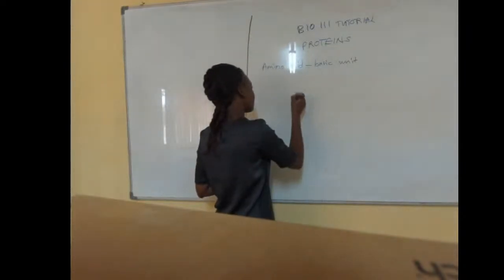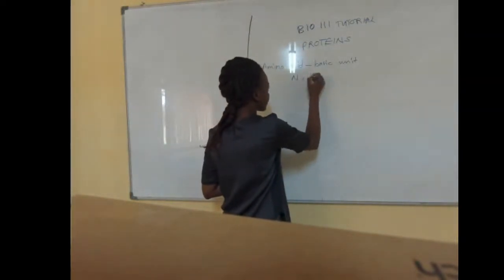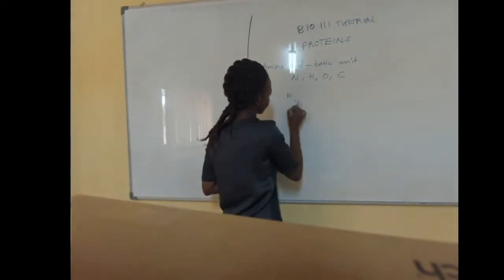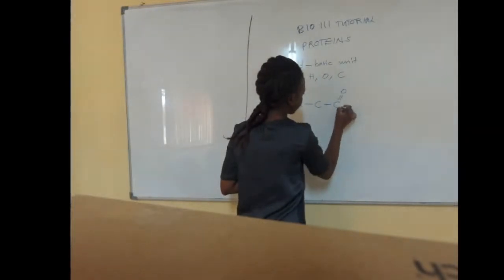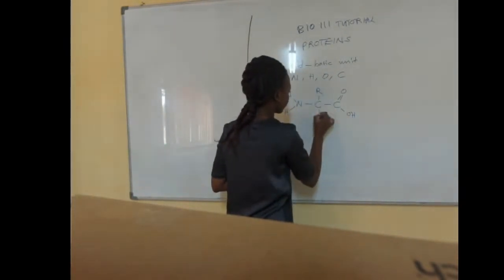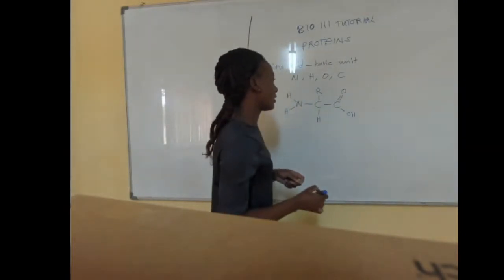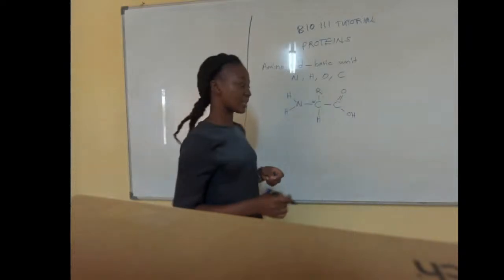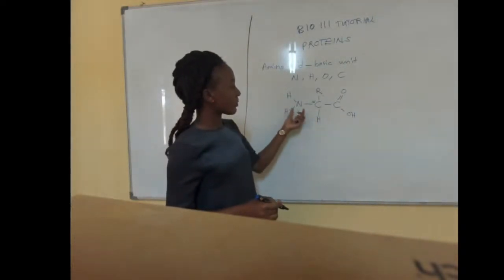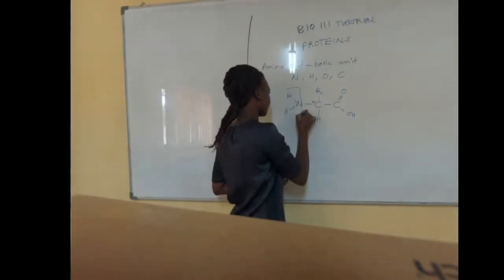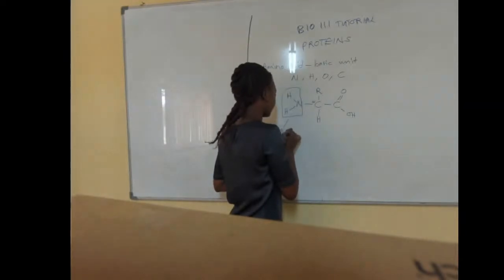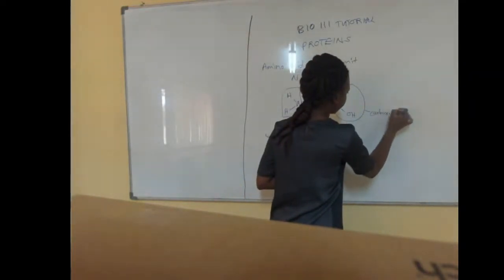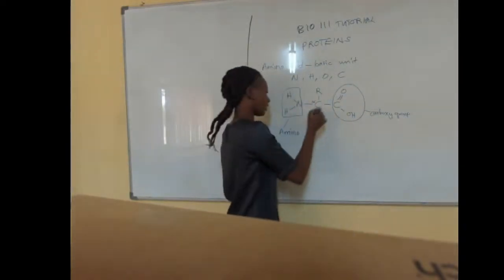In the amino acid's general formula, you expect to find elements like nitrogen, hydrogen, oxygen, and carbon. For the general formula, you have an alpha carbon — the center carbon — which is attached to the carboxyl group, the hydrogen atom, the amino group, and the R group. So this part is called the amino group, then you have the carboxyl group, and you also have the R group.